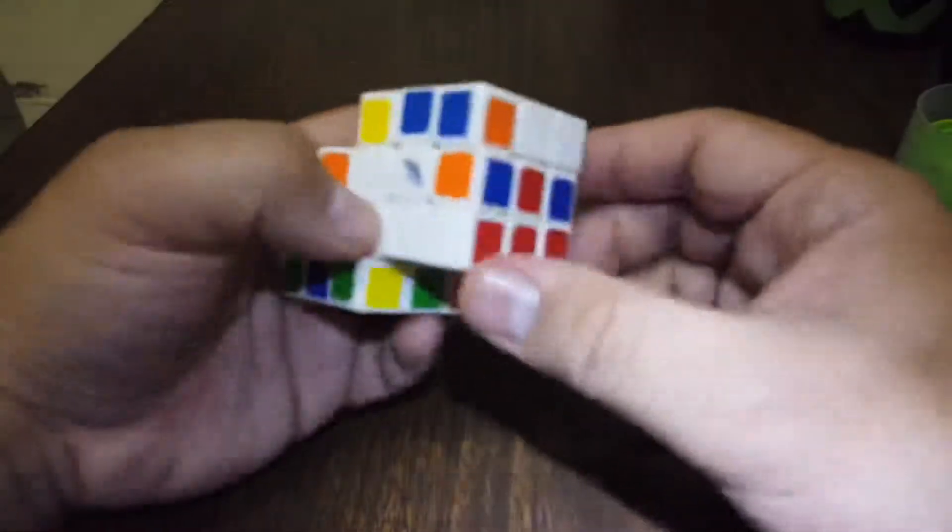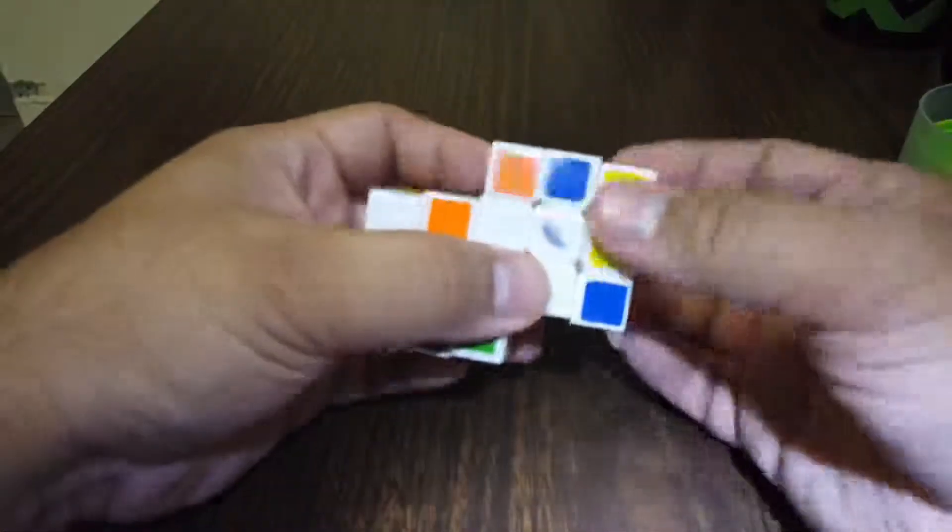Now I've got to solve these two. Let's see, white and red. This needs to be flipped. I'm going to do this algorithm here. So that's flipped now. That can go this way. So that's in.